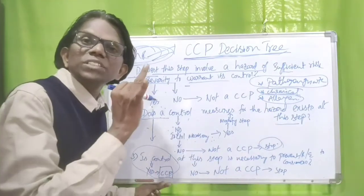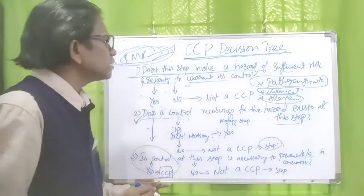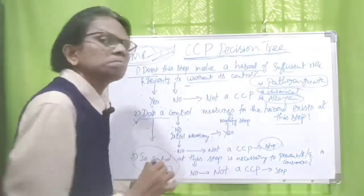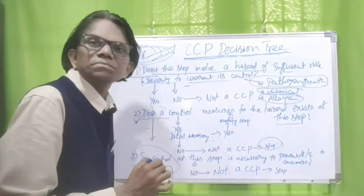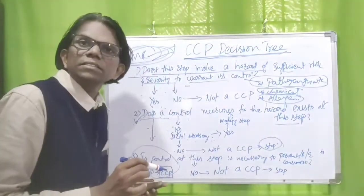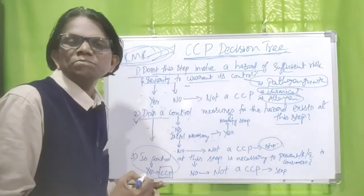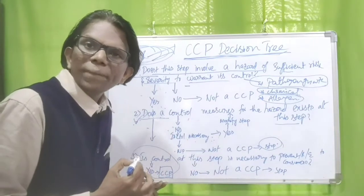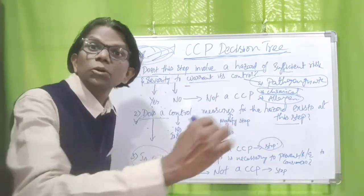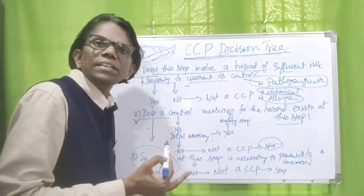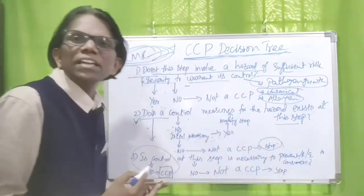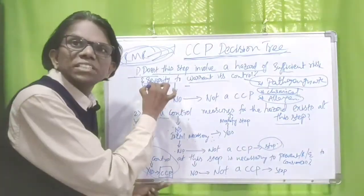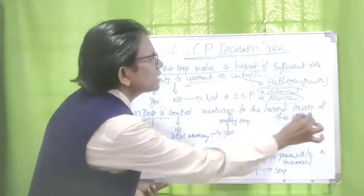The product is cooked frozen aquacultured shrimp to be eaten after cooking — that is the product description. The first question: does this step involve a hazard of sufficient risk and severity to warrant its control? We have taken pathogen growth and contamination. The answer is yes, because at the harvesting site, poor sanitary practices may cause pathogen contamination, and during transit, pathogen growth may also occur. We need to ensure transit controls, proper ice packing, and temperature checks upon receiving.